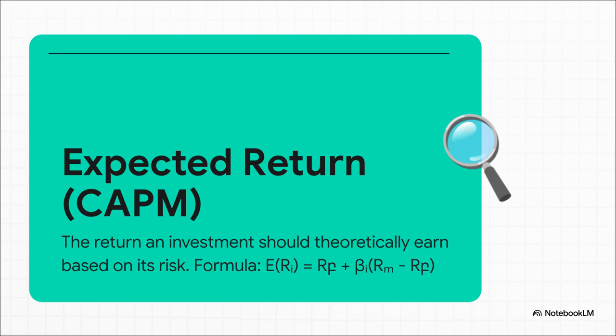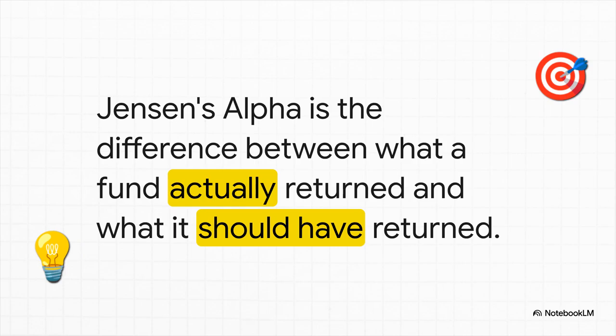That baseline comes from a really foundational idea in finance called the Capital Asset Pricing Model, or CAPM for short. This formula gives us the expected return for any investment. It does this by looking at the risk-free rate — what you could get from a super safe investment — and the investment's volatility compared to the market. We call that its beta. And this is where our investigation really gets interesting.